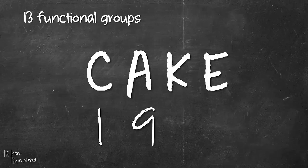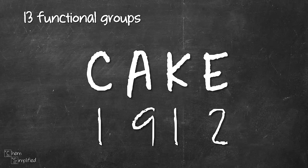As mentioned, there are 13 groups all together and 1912 cake is the key. There's one group that starts with C, 9 that starts with A, 1 that starts with K, and 2 that starts with E. And here's our cake.